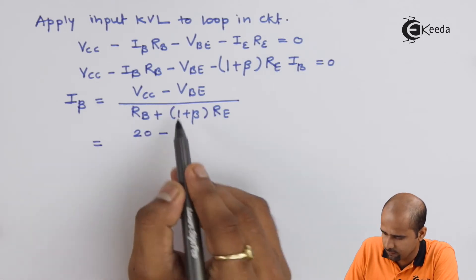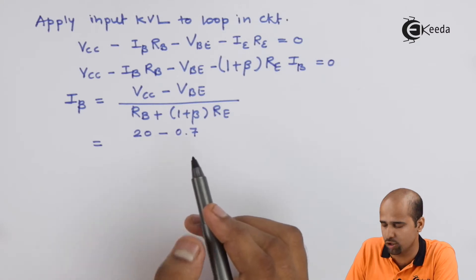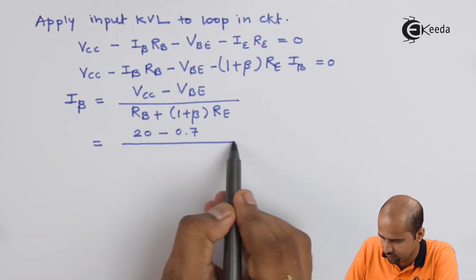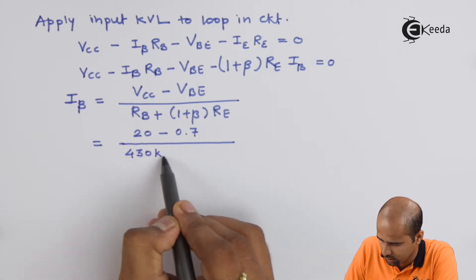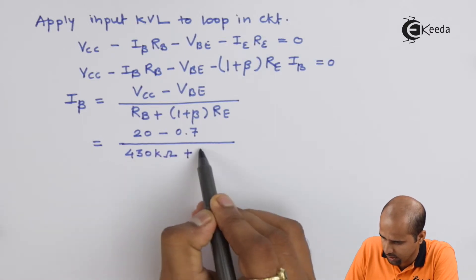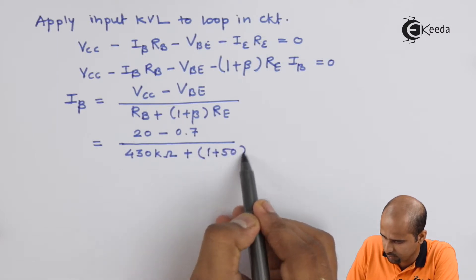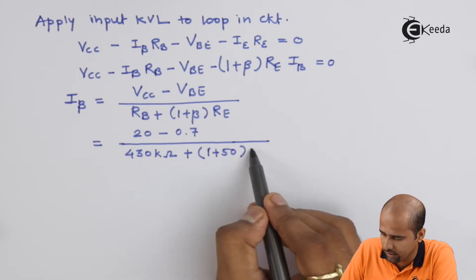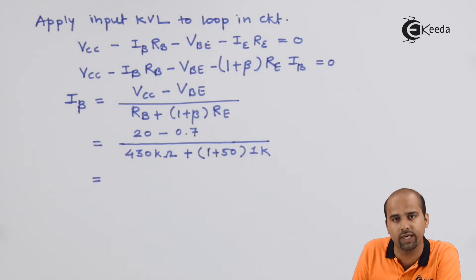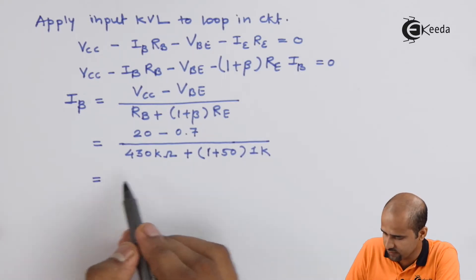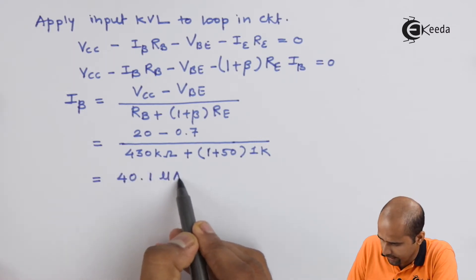VCC is 20. VBE is 0.7. If it is not given you have to take as 0.7. RB which is 430 kΩ plus 1 plus beta that is 1 plus 50 which is nothing but value of beta. RE is 1K. And you can easily calculate that particular value.